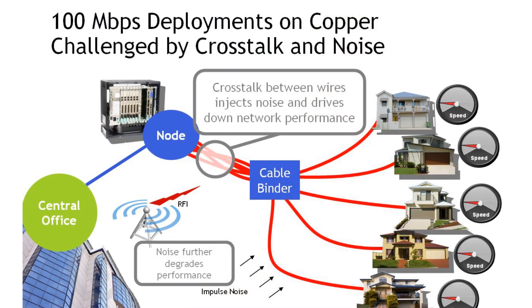The major challenge in deploying very high-speed DSL over existing copper networks is the degradation from crosstalk between adjacent copper pairs in the cable.